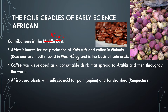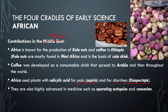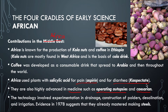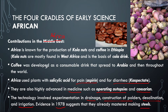Africa used plants with salicylic acid for pain — that is aspirin — and the area, that is kaopectate. They were also highly advanced in medicine: they were among the first to perform autopsies and cesarean procedures in childbirth. Technology involved experimentation and drainage construction, desalination, and irrigation. Evidence found in 1978 suggests they had already mastered creating steel even before it was established in Europe.